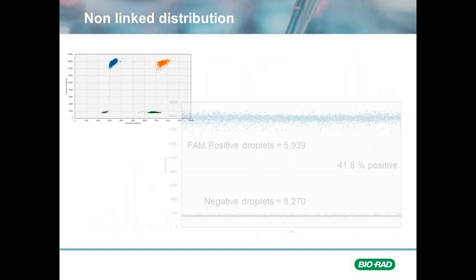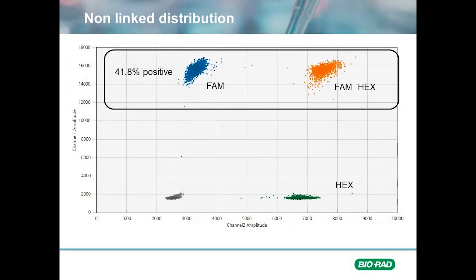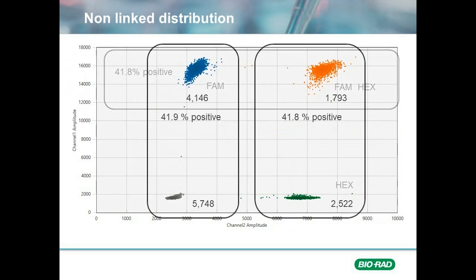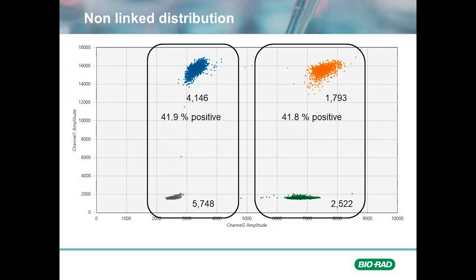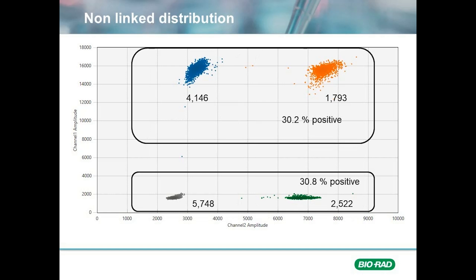To explain how we determine linkage, let's first take an example where the two targets are not linked. If we were to run that sample and look at the 2D plot, we would see droplets that are both positive and negative for both FAM and HEX. Looking at the 1D plot under the FAM channel and counting the number of positives and negatives, in this example we see that 41.8% of the droplets are positive for FAM. Going back to the 2D plot, this 41.8% positivity rate is composed of droplets positive for FAM alone and droplets positive for both FAM and HEX. The ratio of positives is effectively the same on both sides, and performing the same analysis on the HEX positive droplets yields similar results.